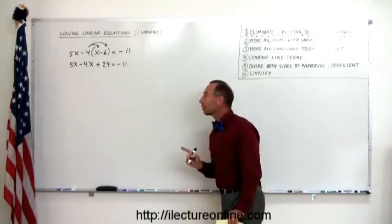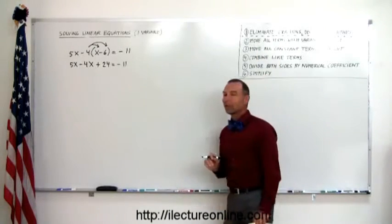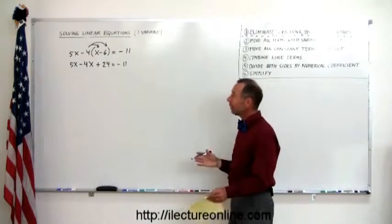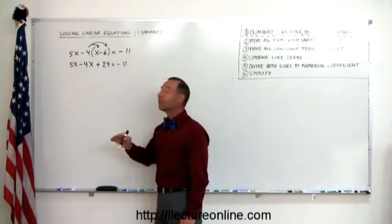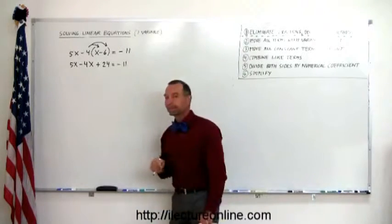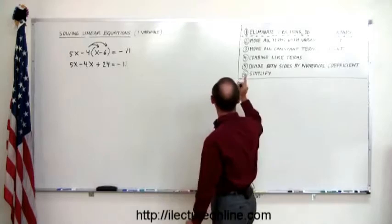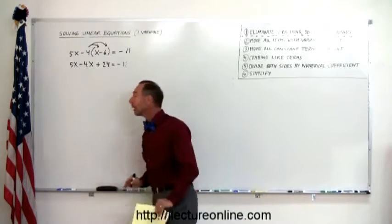Now we have an equation just like the examples we saw before with number 1 no longer necessary. Step number 1 is simply there to turn something that has fractions, decimals, or parentheses into something that has none of those. Then you just follow the next five steps. The next step says move all the terms with the variable to the left, and they're already there.